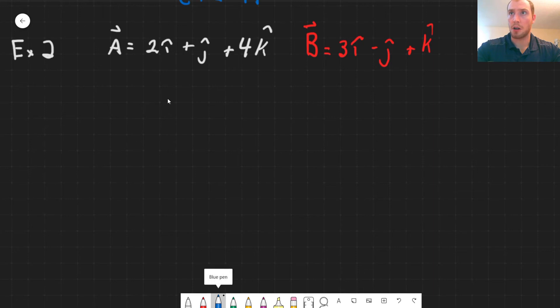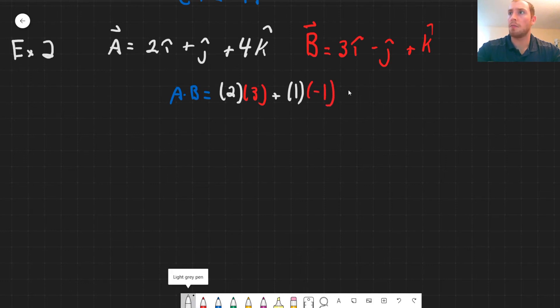So starting off with the dot product, we have A dot B is equal to 2 multiplied by 3, then we have plus 1 multiplied by negative 1, and then we have plus 4 multiplied by 1. We can evaluate what this is. This is equal to 9.